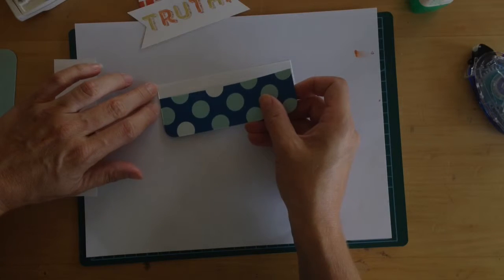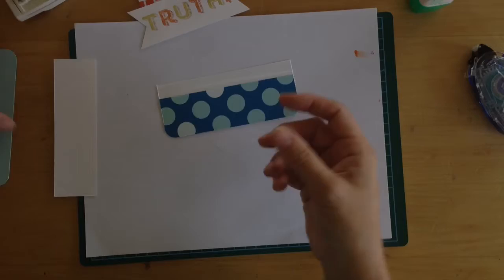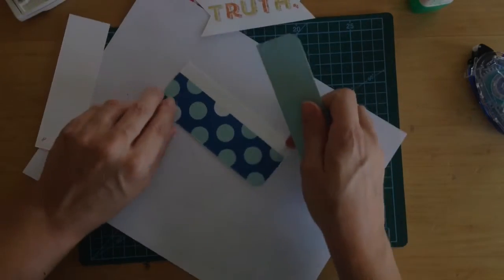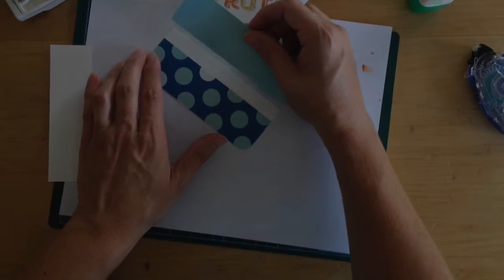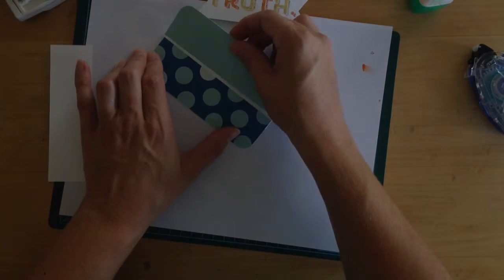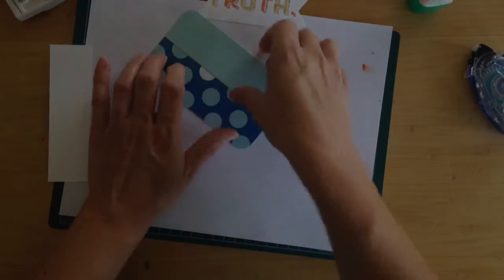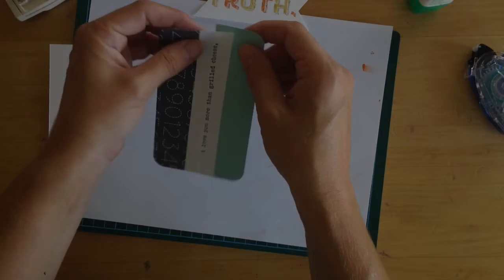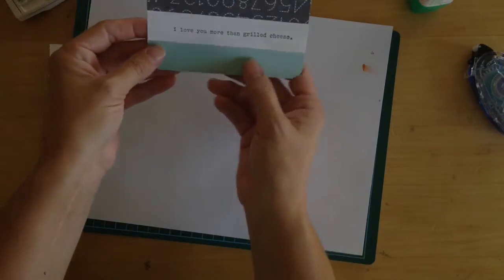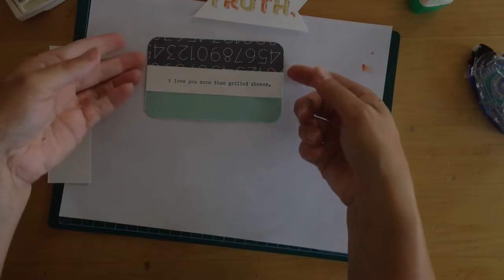Then we're going to take one piece and put it here. And if you want it to be real exact, you could use your grid paper and make sure that you're getting those absolutely perfectly straight. So there is, oh, and see, I did that upside down. But that's okay. That makes it kind of fun. So there you have 'I love more than grilled cheese.'